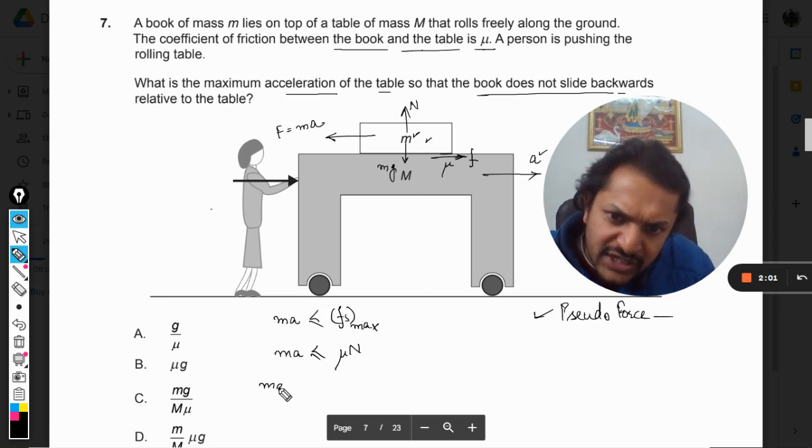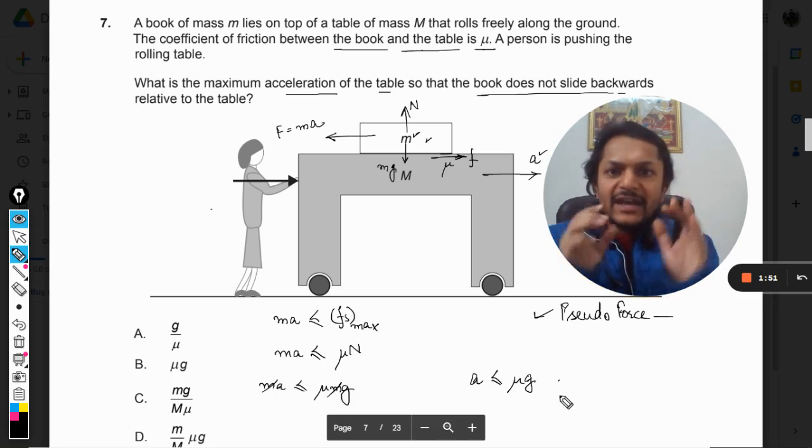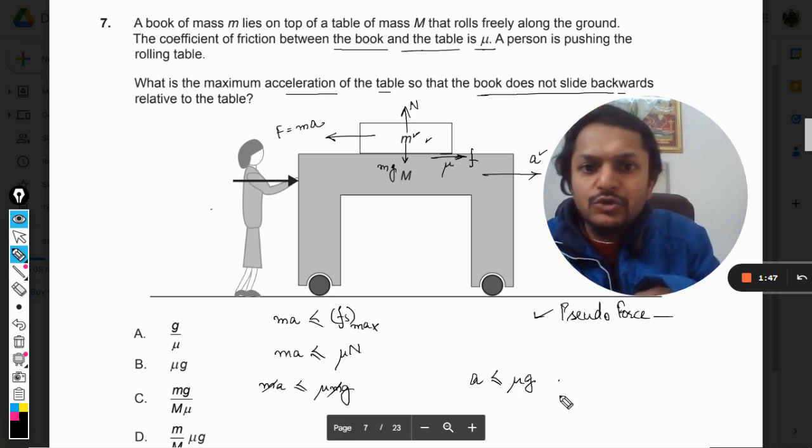So ma should be less than or equal to μmg. m gets cancelled out, so we get that the acceleration of the vehicle has to be less than μg. If it is less than μg, that is option B, the correct answer.